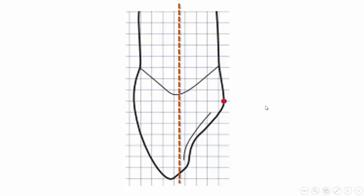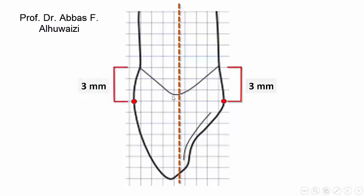The peak of curvature palatally is 3 mm below the highest point of the cervical line, which is about the middle of the cingulum, while the peak of curvature labially is also about 3 mm from the highest point of the cervical line buccally.